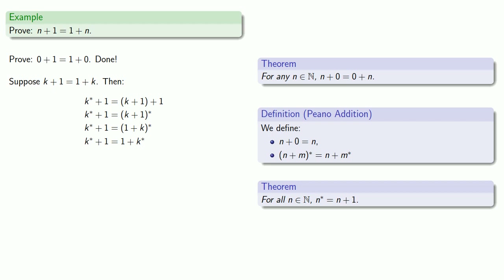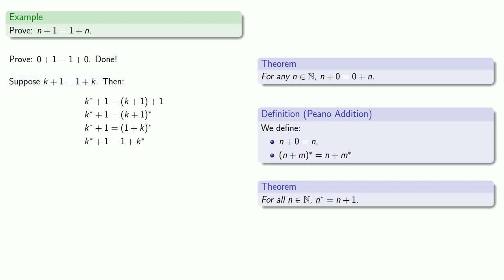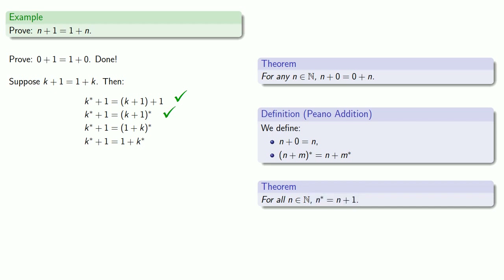Remember that you should be able to drive over the bridge forward. So let's just make sure that can happen. Suppose k plus one equals one plus k. k star plus one — our theorem says that k star is k plus one, so that's our first step. Our theorem says that k plus one plus one is k plus one star, so that's our second step. Our assumption is that k plus one equals one plus k, so that's our third step. And our definition of addition says that one plus k successor is one plus the successor of k.